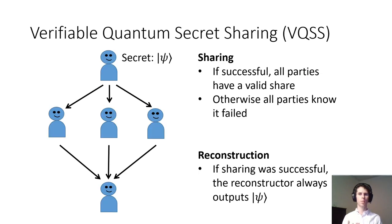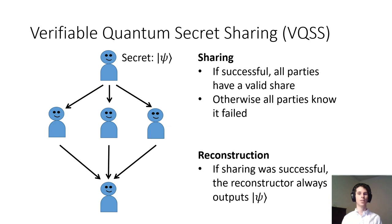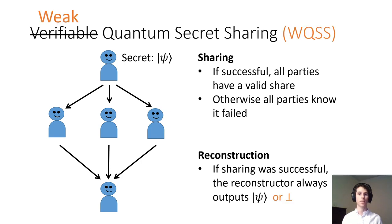A verifiable quantum secret sharing scheme has two phases: sharing and reconstruction. At a high level, if the sharing phase is successful, then all parties have a valid share; otherwise, all parties know that it failed. Additionally, if the sharing phase is successful, then the reconstructor should always output the same secret — it is not allowed to fail during reconstruction. Similarly to prior work, we'll start by building a weaker primitive called weak quantum secret sharing, and then use this to build verifiable quantum secret sharing. In weak quantum secret sharing, the reconstructor is also allowed to output a special failure state.